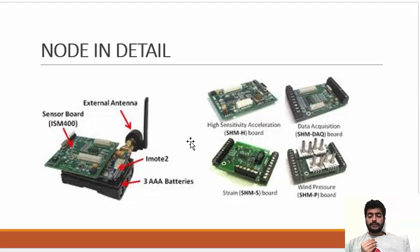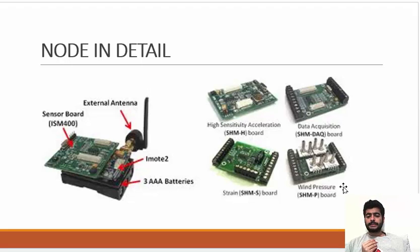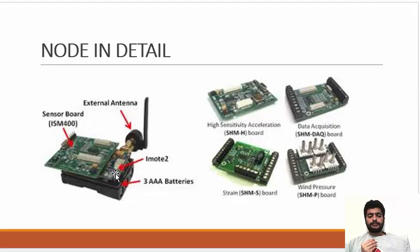There are different types of VAST nodes used for diverse purposes. Here is a high-sensitivity acceleration SHM board, which was developed at MIT in the year 2003 and is still in development with different versions. This is the data acquisition board, used at the application layer. This is the strain board, and this wind pressure SHM board is an external or enhanced part of data acquisition. I will explain more by giving an example.